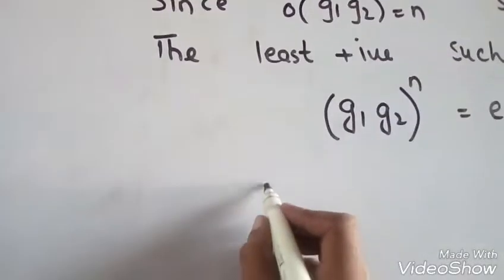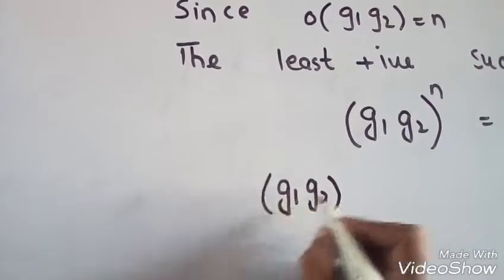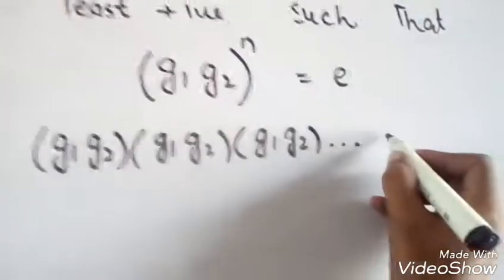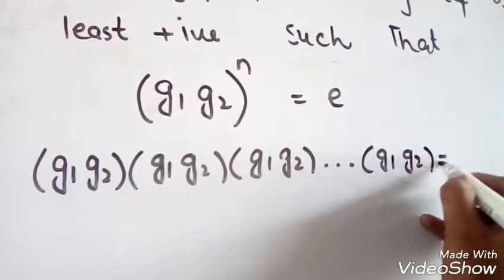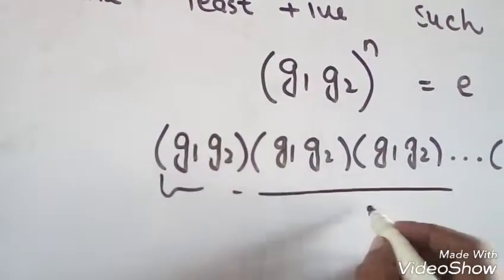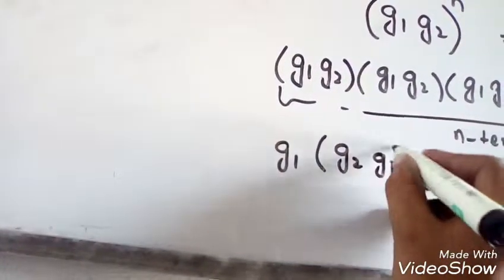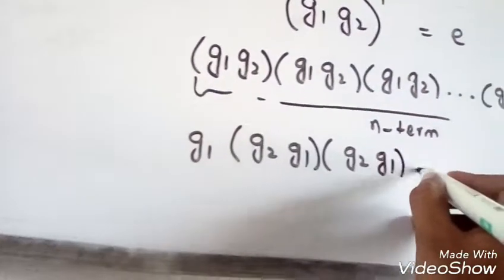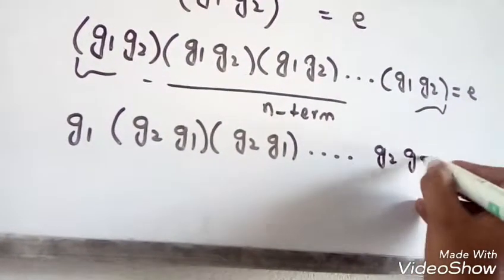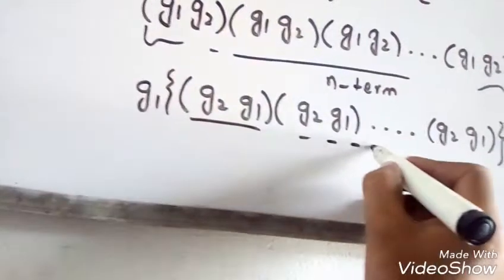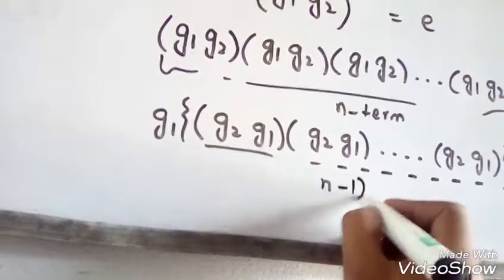We used this definition. Now (G1·G2)^N can be expanded as G1·G2, G1·G2, G1·G2, and so on, up to G1·G2 equal to identity. Here we have N terms.